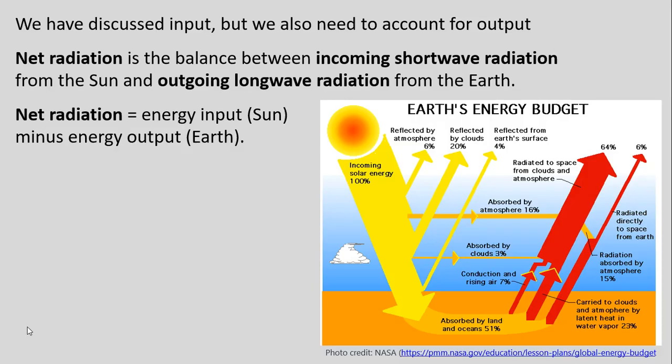As we already discussed, some basics of input energy from the sun — in terms of input to the Earth system — we also then need to account for output. So the first part of this lecture, we're going to be talking about more of that incoming solar energy, but also then we're going to move to talking about some account of output, because what we're interested in here is this idea of net radiation, which is the balance between incoming shortwave radiation from the sun and the outgoing longwave radiation from the Earth.